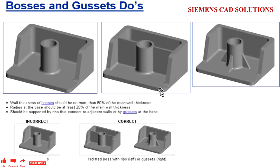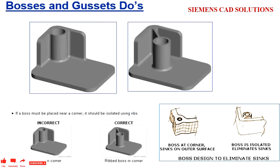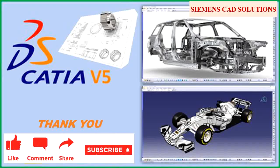When creating the boss at a corner, having it like this is incorrect. We need to have the boss positioned like this in the corner area. Boss at a corner can cause sinks on the outer surface. In the video description, we have provided the link to download free practice models. Please subscribe to this channel. See you next time.